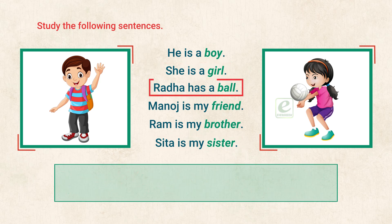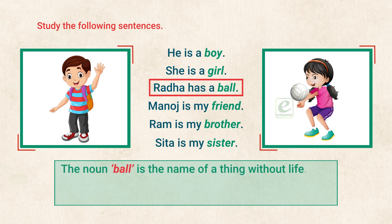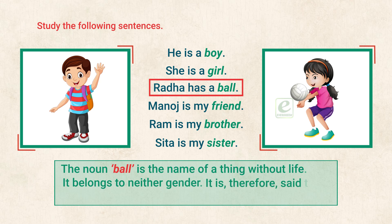In sentence 3, the noun 'ball' is the name of a thing without life. It belongs to neither gender. It is, therefore, said to be of the neuter gender.